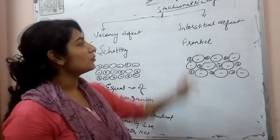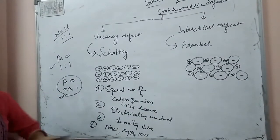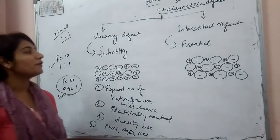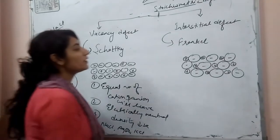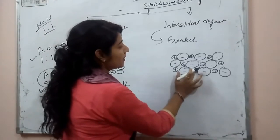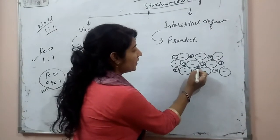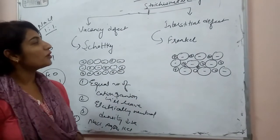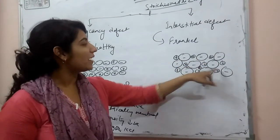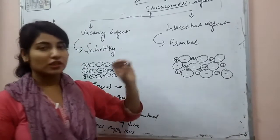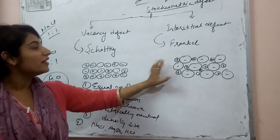The next type of stoichiometric defect is known as interstitial defect, also known as Frenkel defect — or we can say Frenkel defect is a type of interstitial defect. In this type of defect, the size of the cation is very small and it will occupy the interstitial site while leaving its original site. Now, the interstitial site means the gap present between the crystal lattice. There are small gaps or voids present, and the small-sized cation occupies the interstitial site since its size is very small.